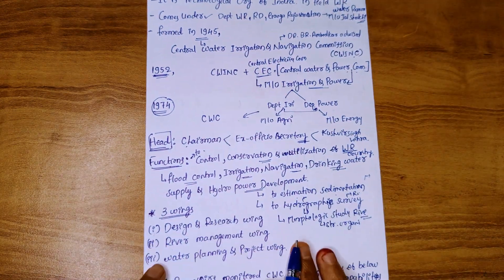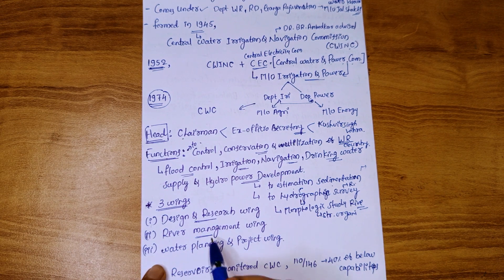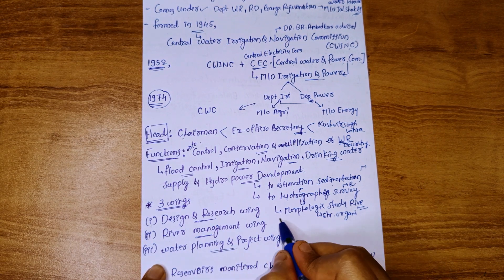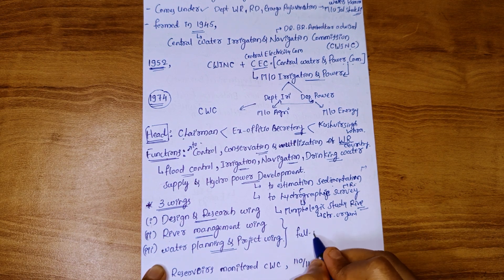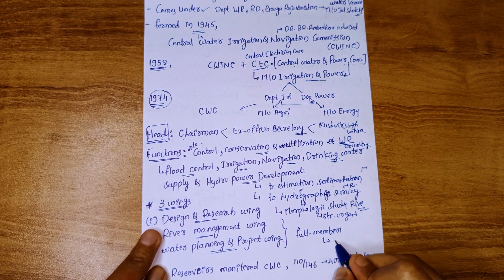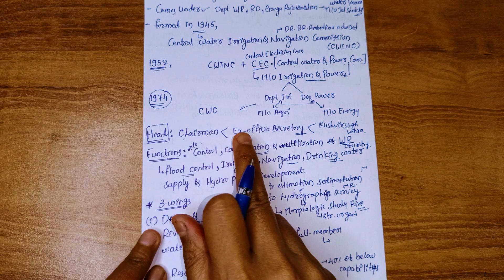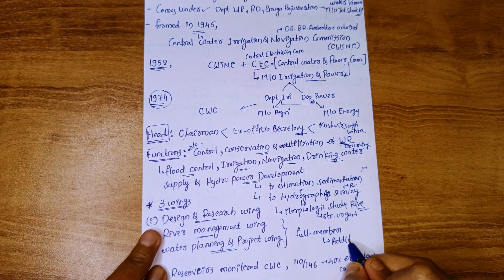CWC has three wings: Design and Research Wing, River Management Wing, and Water Planning and Project Wing. These wings are separately managed by full-time members who have the designation of Additional Ex-Officio Secretary.